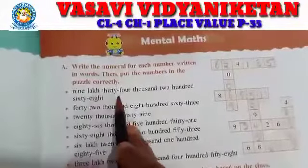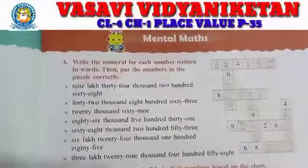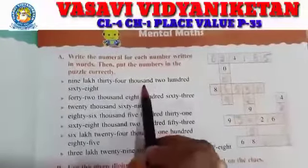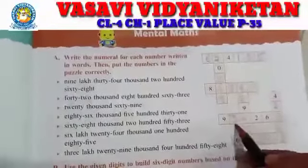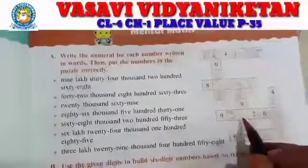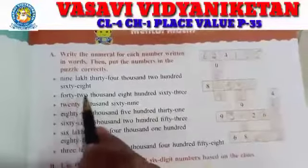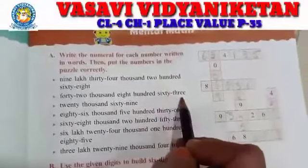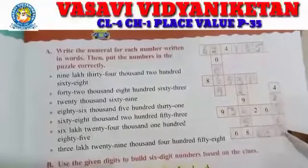See, 9,34,268. The first one is 9,34,268. Next, 42,863.